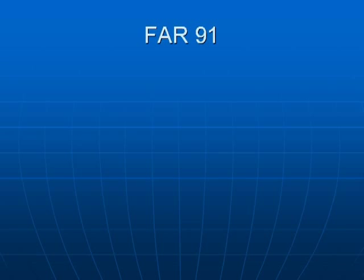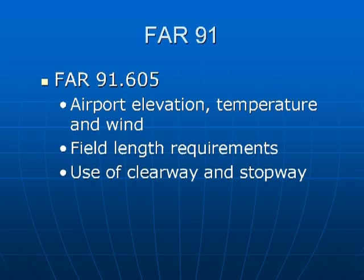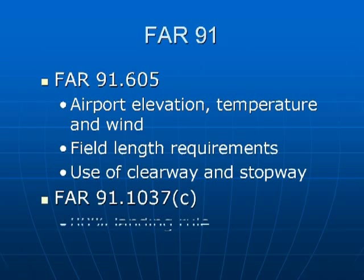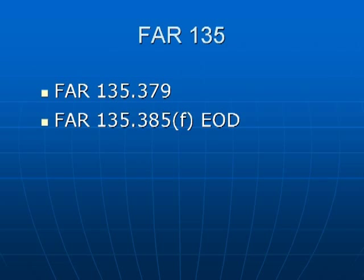For those operating under FAR Part 91, section 605 addresses takeoff considerations. Airport elevation, temperature, and wind need to be accounted for along with field length requirements and use of clearway and stopway. In addition, those operating as a fractional may use the 80% landing rule — given a 10,000-foot runway, they may use 80% or 8,000 feet to determine max landing weight. Moving to Part 135, section 379 addresses takeoff limitations. For those operating under eligible on-demand who have applied for and received the OPSPEC under section 385 Foxtrot, they may use the 80% rule just like the fractional operator.